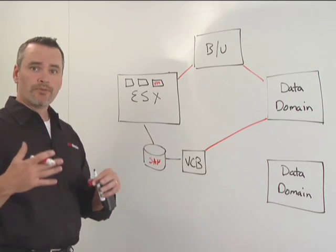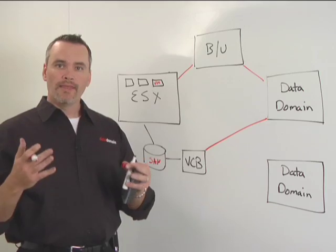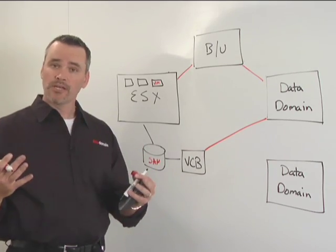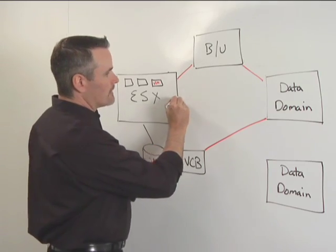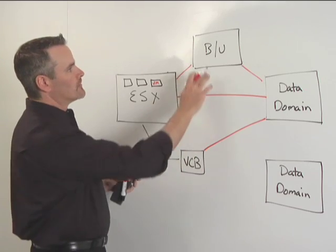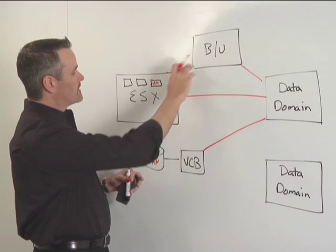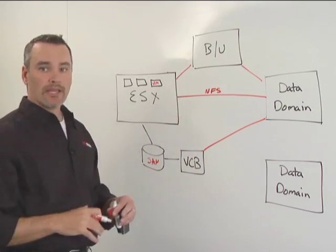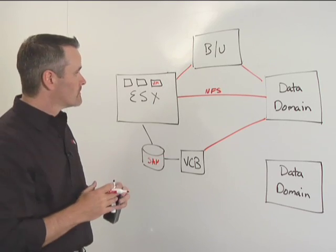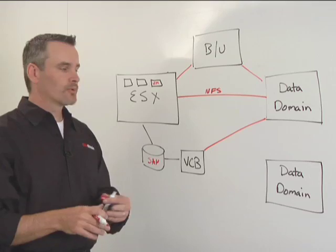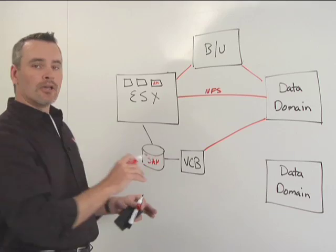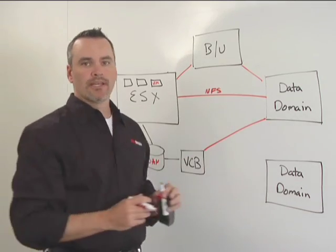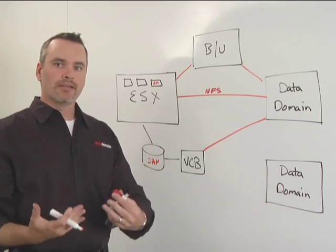There's a third method you might use if you're using something like VisionCore's VRanger Pro. Rather than using a proxy, you want ESX to write directly to Data Domain, and that actually can be done. VRanger Pro initiates a backup, ESX mounts the Data Domain directly via NFS, and stores the backup images on the Data Domain system. So three different techniques — traditional backup software or specialty products designed to back up VMware — but the end result is the same: all of your backup images are copied from your ESX environment and stored on a Data Domain system.